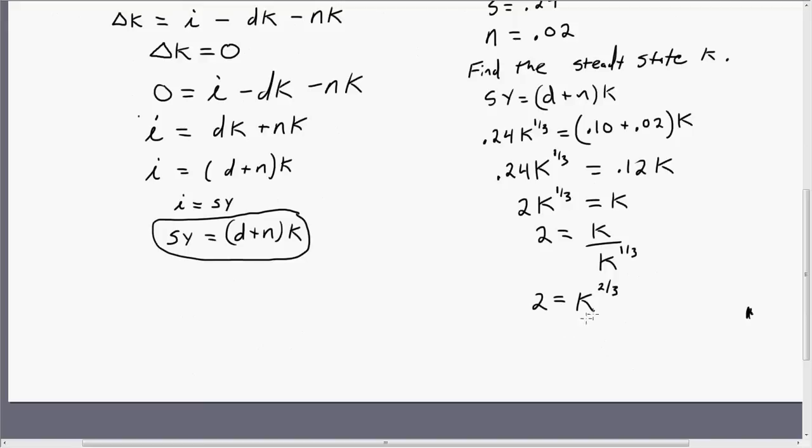Okay, the next thing we have to do is get rid of this two-thirds by raising both sides to the three-halves power. So K equals 2 raised to the three-halves power, 1.5. And that's going to equal roughly 2.83. So that is our steady state capital labor ratio, 2.83.